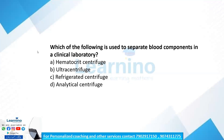Which of the following ways is used to separate blood components in the clinical laboratory? Blood components are separated using Option C — hematocrit centrifuges — which is the correct answer.